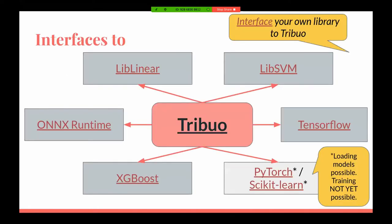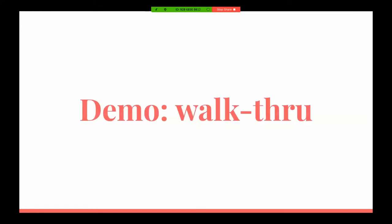Looking at interfacing more closely, these are the different external libraries or packages that Tribio connects with. Except in the case of PyTorch and scikit-learn, you can only load those models into Tribio for inferencing purposes — you cannot do any training yet because that's yet to be built. But for the other components, those libraries are available for both training and inferencing purposes.